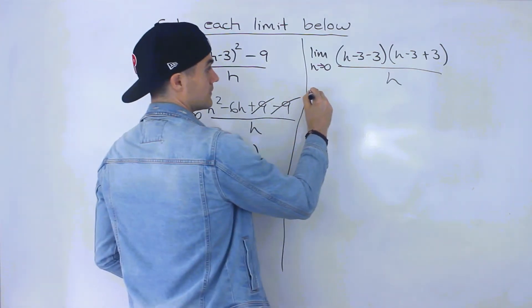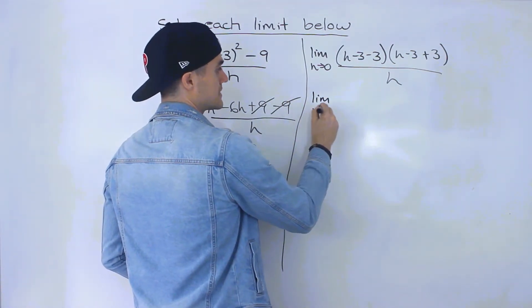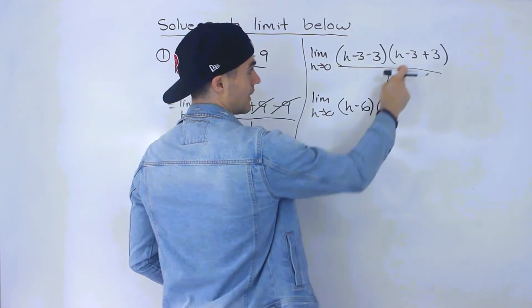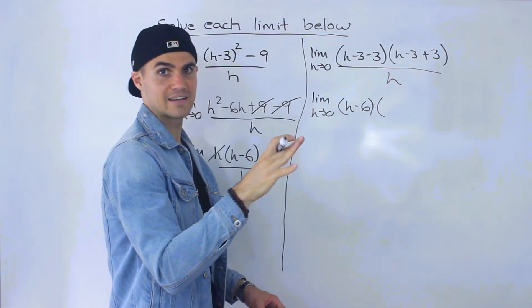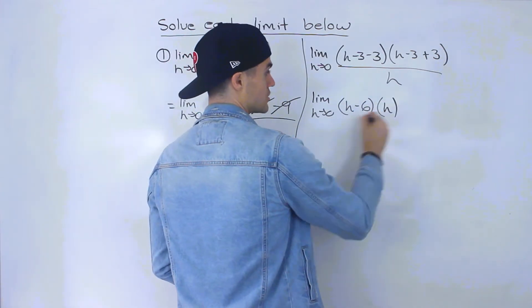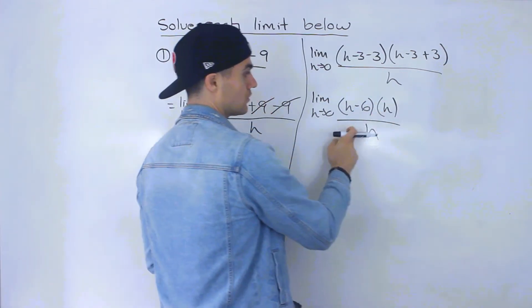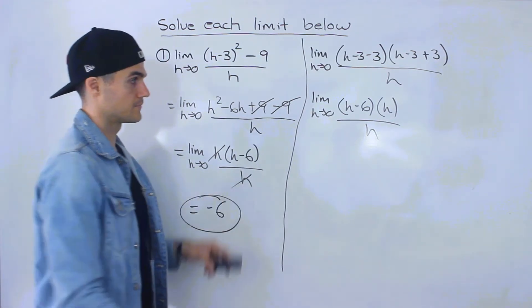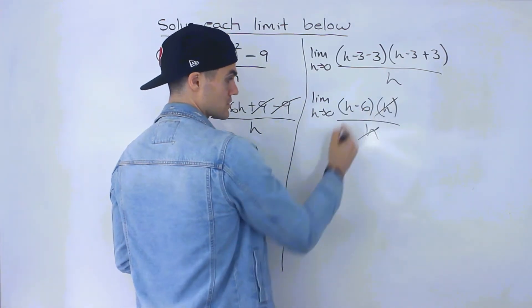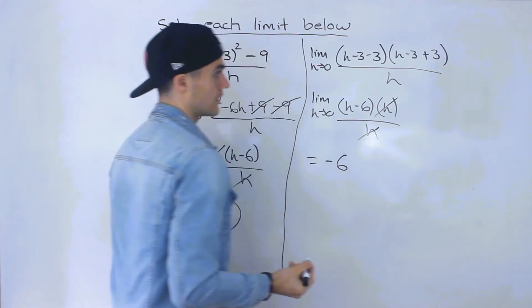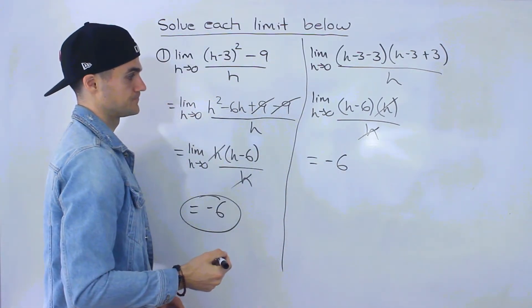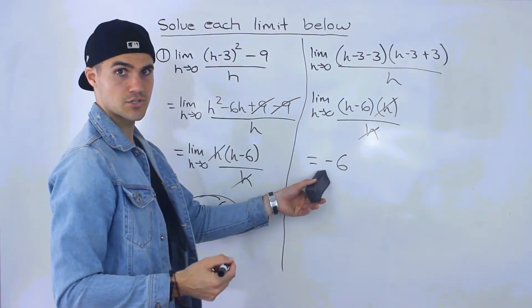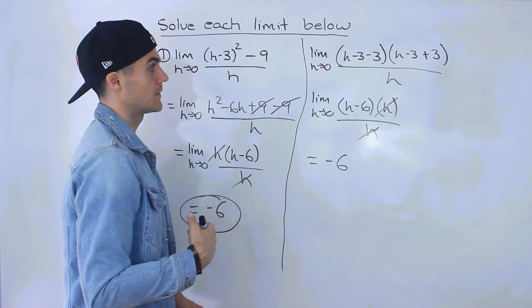So from here all we have to do is simplify each of these brackets so notice this bracket simplifies to h minus 6 and then minus 3 plus 3 that nets out to 0 and we're just left with h. This is all over h so notice that this is the exact same expression that we have here. h's cancel out plug in 0 for h we end up with negative 6. Right so the second method this method that I just showed you is actually my preferred way to do it.